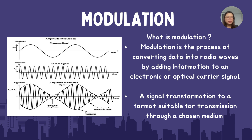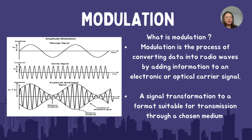We have a message signal and we have a carrier signal. So after the modulation process, we eventually will get two combined signals with two identities combined. So the changes in the amplitude of the carrier signal is according to the instantaneous information signal, V(t).